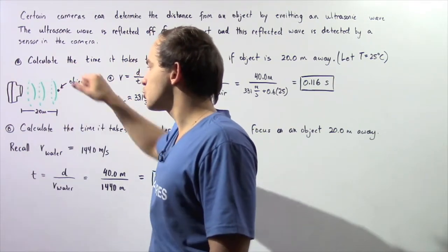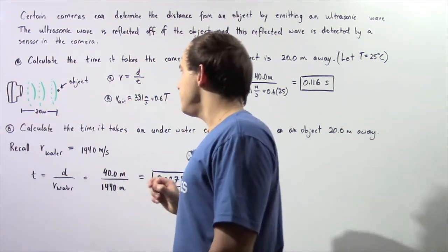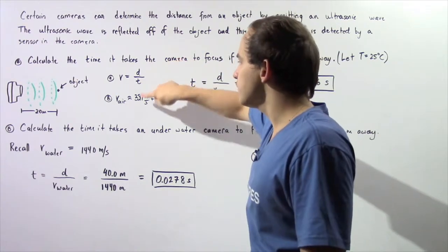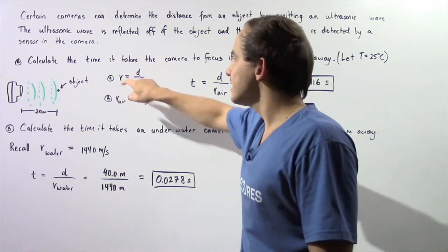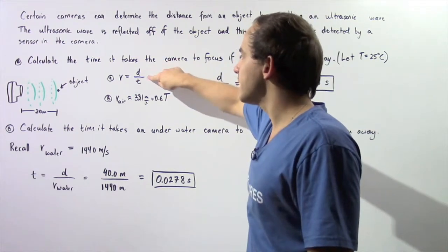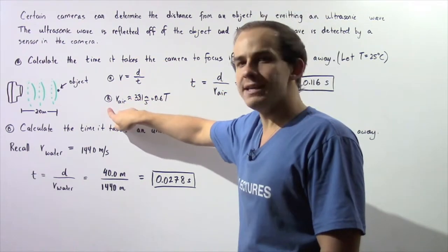So the total distance it travels is 40 meters. We have to use the following two formulas to solve our problem. Velocity is equal to distance divided by time.